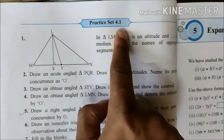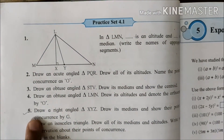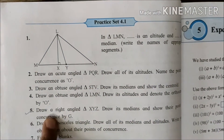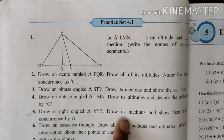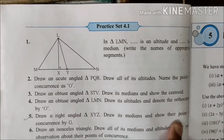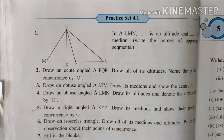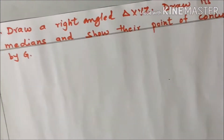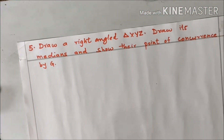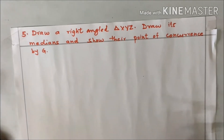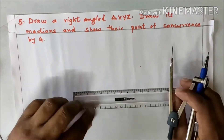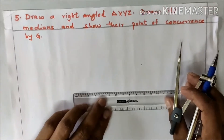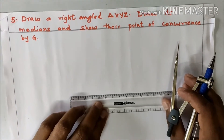Practice 4.1, question number 5: Draw a right-angle triangle XYZ, draw its medians, and show the point of concurrence. So here we have question number 5. First we will draw a right-angle triangle — a triangle where one angle is 90 degrees.